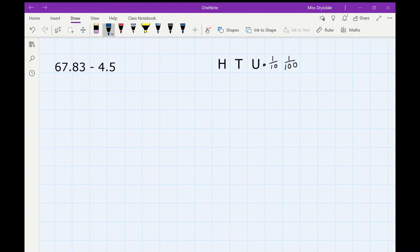Let's write out our calculation. So we've got 67.83 subtract 4.5. I'm going to go ahead straight away and put in our two decimal points directly above each other. And then I'm going to start filling in what number we've got. So our first one, we've got 67.83. And then we're going to subtract 4.5. And again, we've got a little gap there, so we can just fill in with a zero if needed.